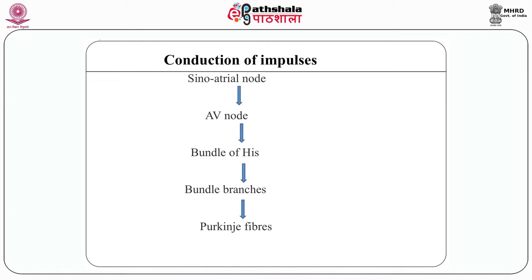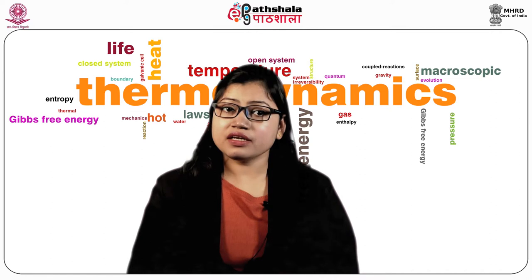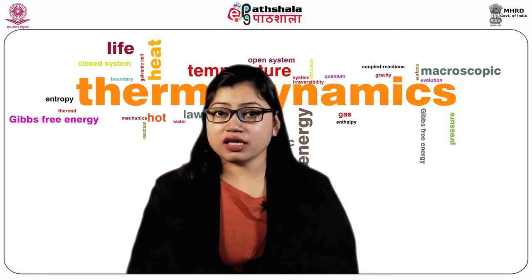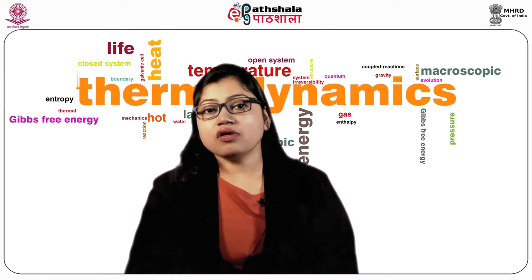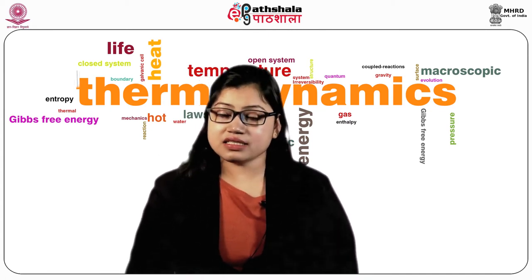Now we are going to study about the sounds of the heart. We have seen the different phases of the cardiac cycle. Blood is pumped out during systole and fills the chamber during diastole. The gushing of blood across various chambers produces vibrations in the muscles, and the changes in pressure lead to opening and closing of the valves. This leads to generation of heart sounds. The vibrations are picked up from various sites of the heart, amplified, heard, and interpreted. The different types of sounds tell us how healthy or diseased the heart is.